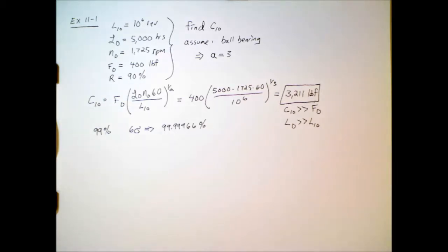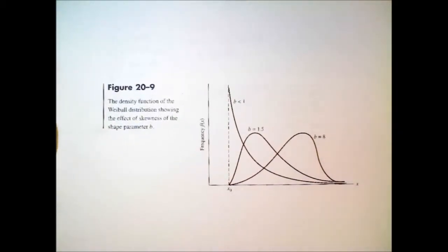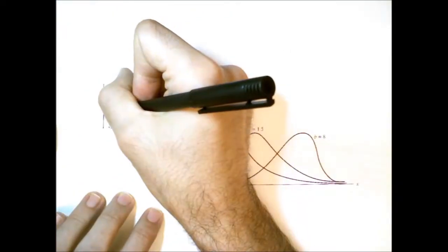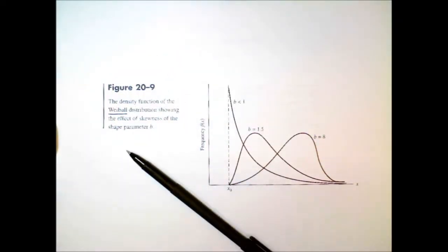The first thing we need to do to understand how to convert between reliability values is to know what probability distribution accurately represents the failure of bearings. It turns out that it's the Weibull distribution that accurately represents the failure of bearings. Not only bearings, but also many other mechanical components are accurately modeled by this distribution.